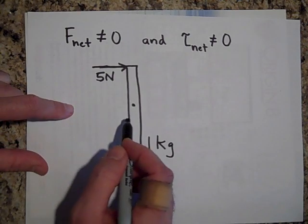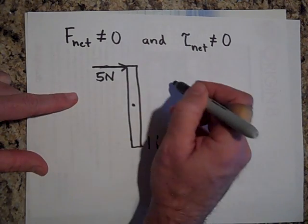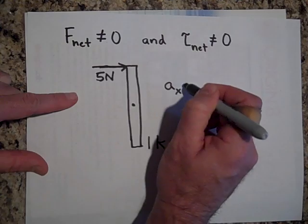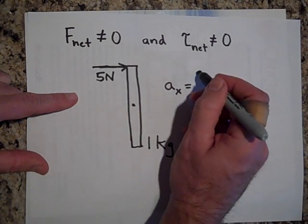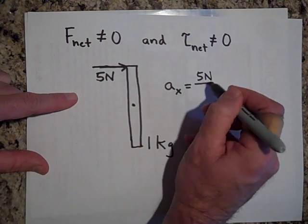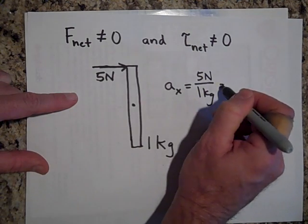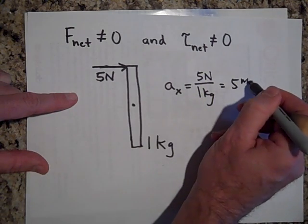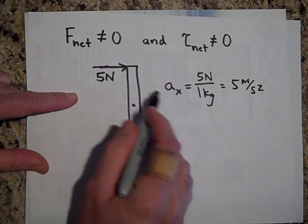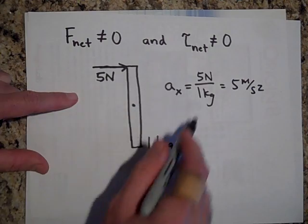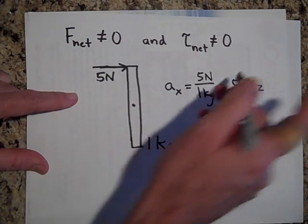So this thing is going to accelerate that way. What would be the acceleration in the x direction? At that moment in time, the acceleration in the x direction is five newtons over one kilogram. That's five meters per second squared. So it's going to accelerate that way. But it's also going to spin as it goes. So it's going to spin and accelerate to the right.